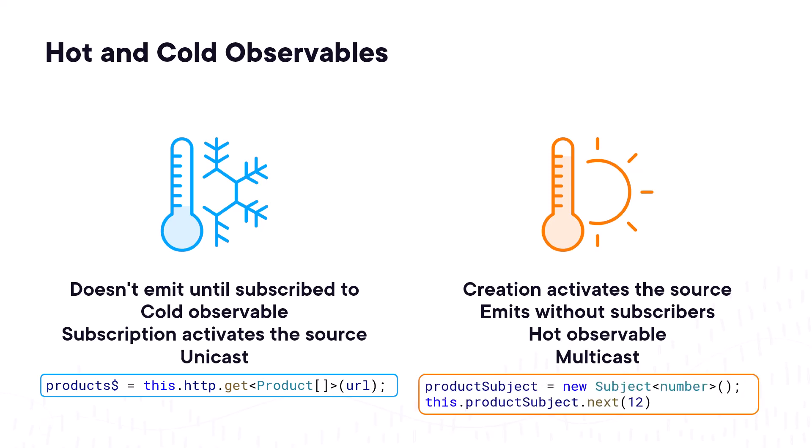Creating a subject defines a hot observable. Using the next method, we emit notifications with the defined data to the observable, even if there are no subscribers. This allows us to emit anything we want. We'll examine this syntax shortly.